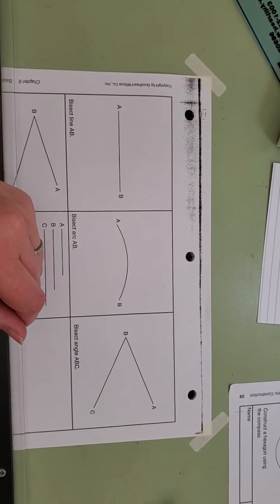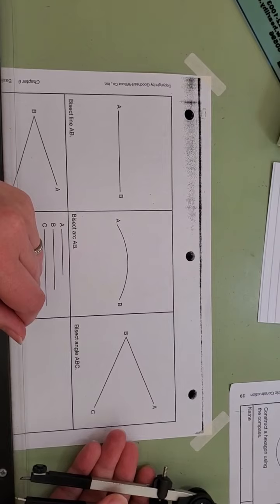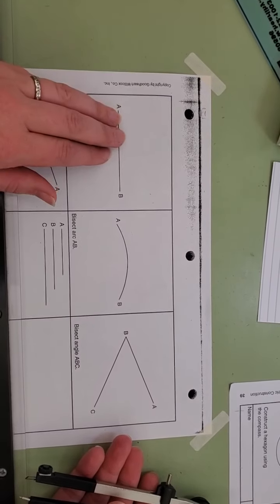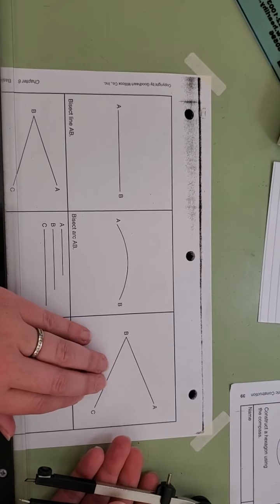This lesson is going to teach you how to use some of our mechanical drafting tools in order to bisect a line, an arc, and an angle.